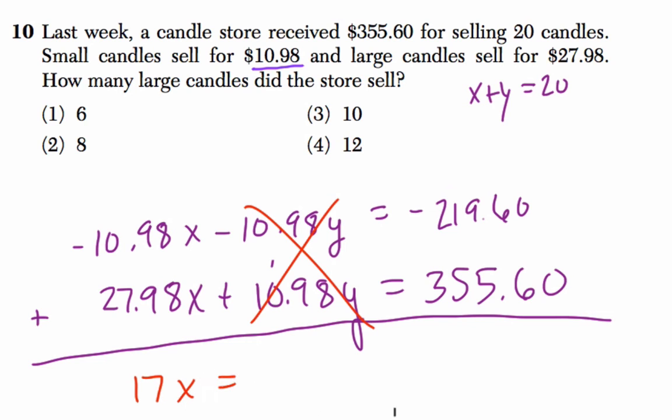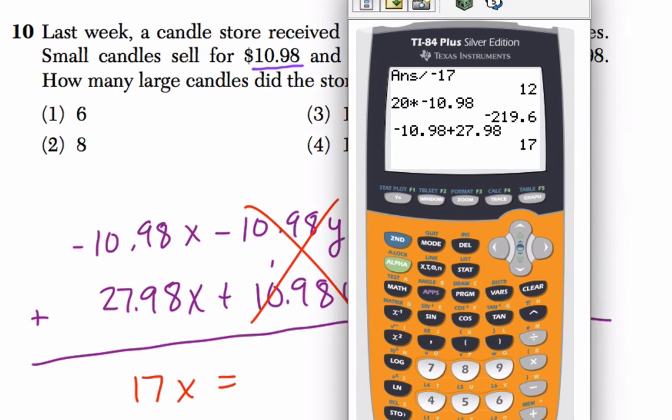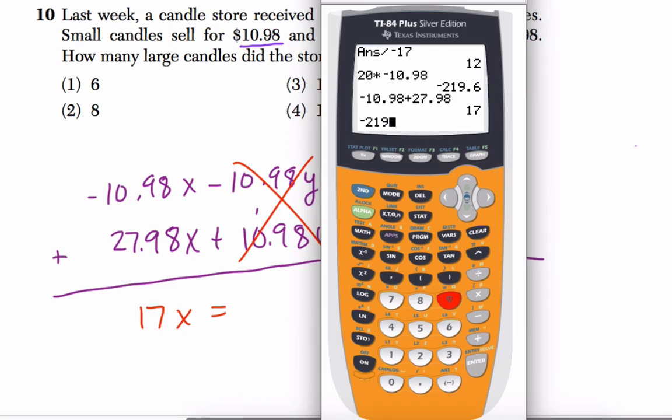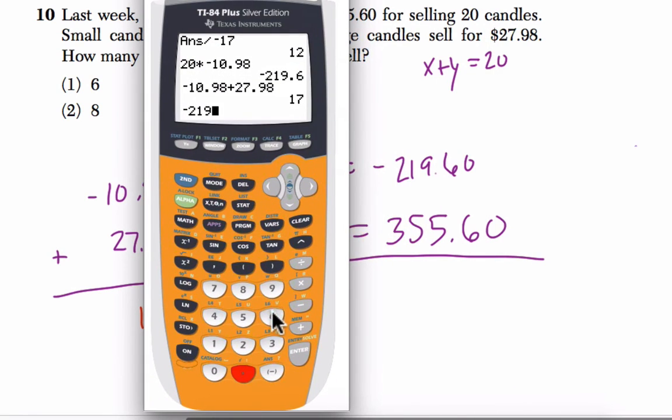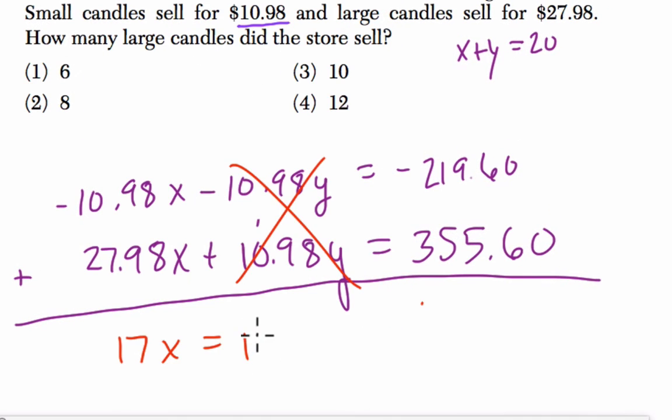17X equals negative 219.6 plus 355.6, and that is 136. I divide both sides by 17, and I get 8. There's 8 large candles.